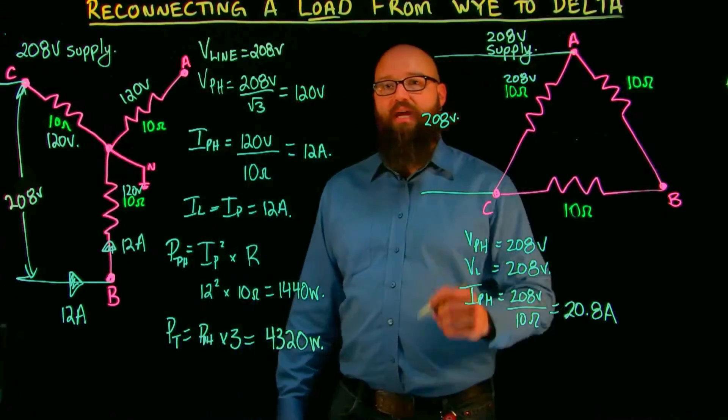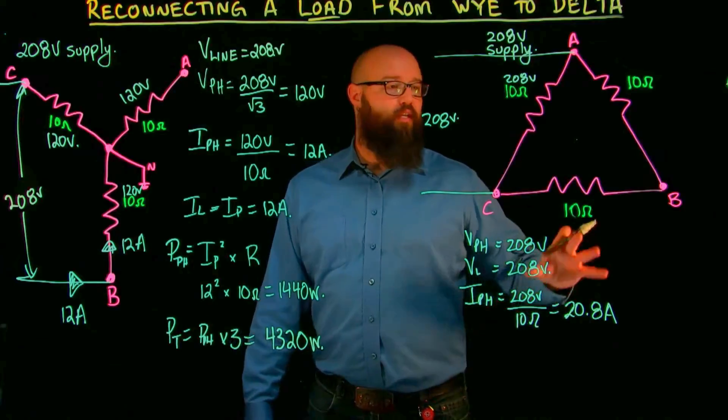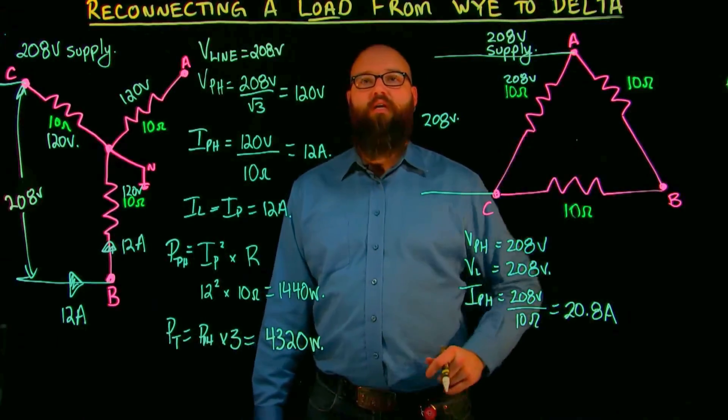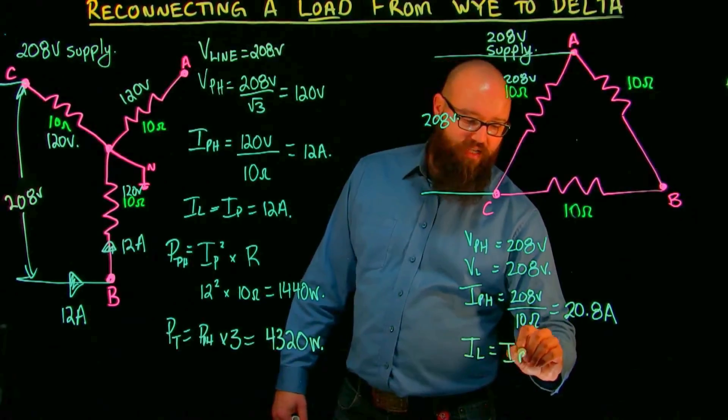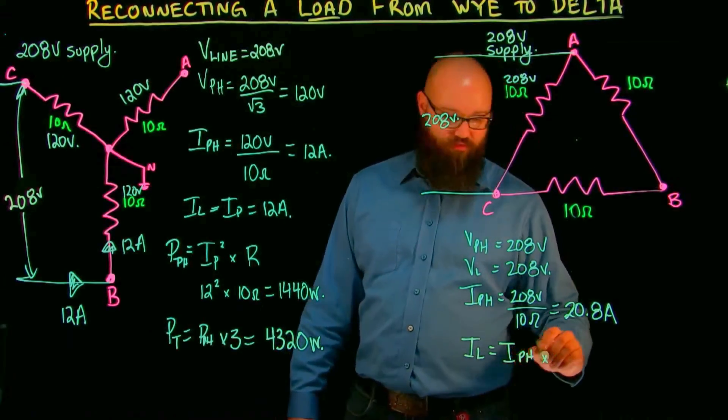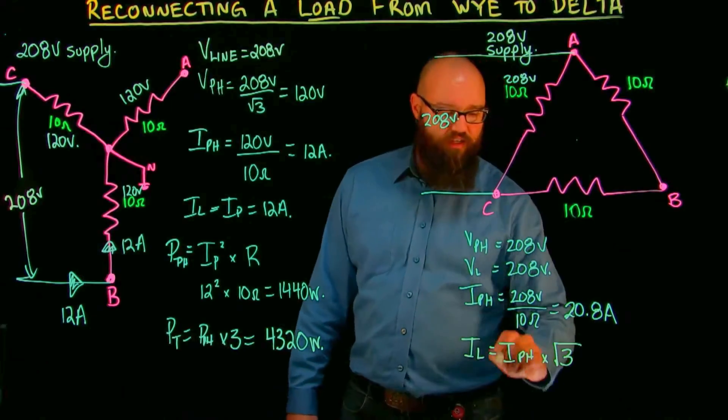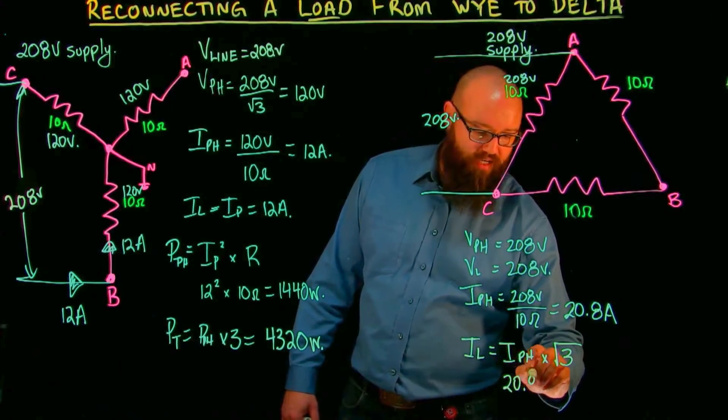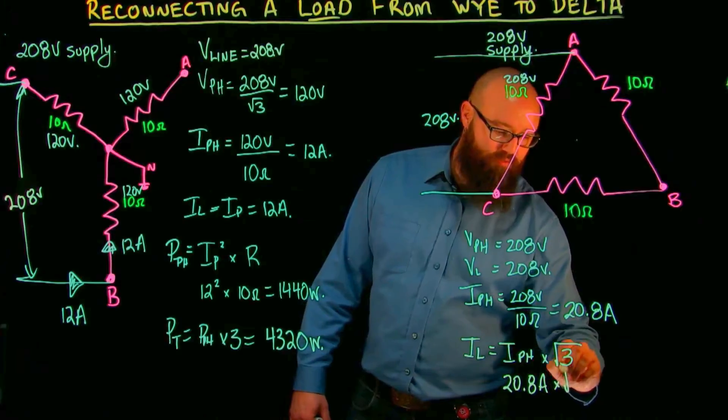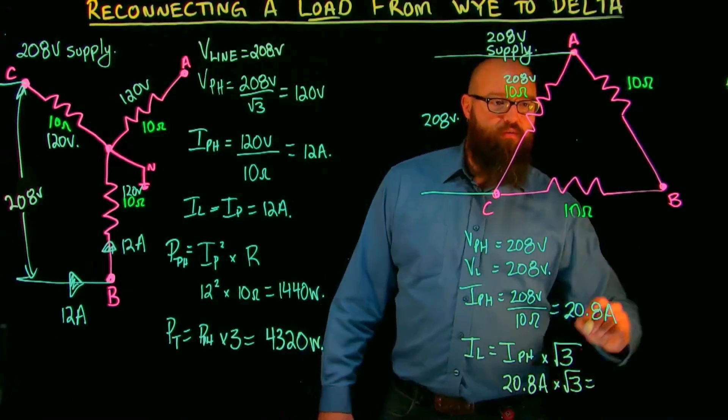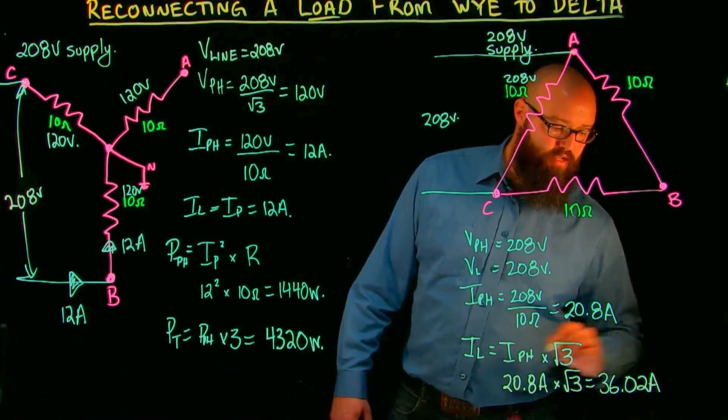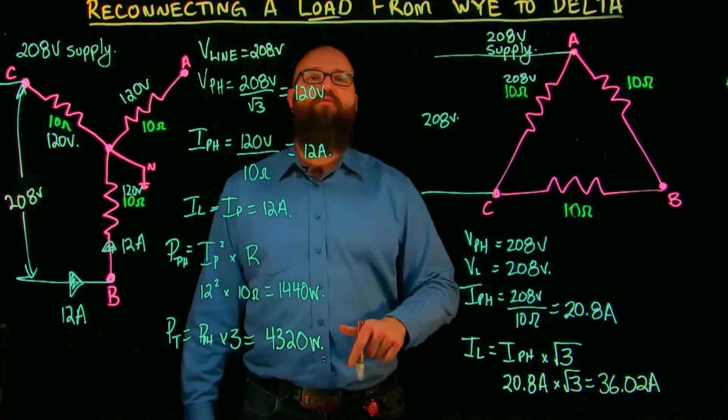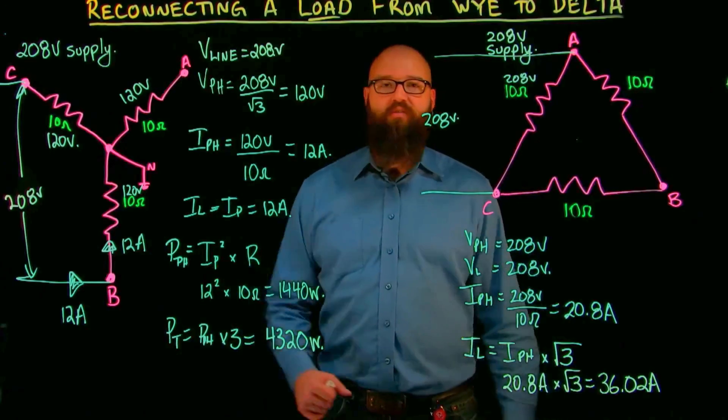Now to find line current, what we know when we're dealing with a balanced delta connected circuit is this: I line equals I phase times root 3. In this case, we have 20.8 amps times root 3 equals we should see somewhere around 36.02 amps.